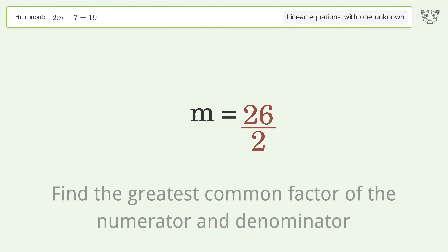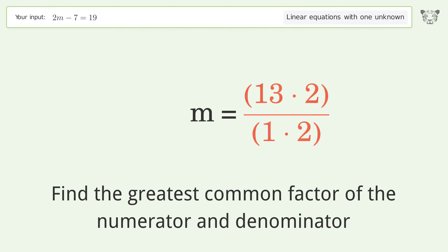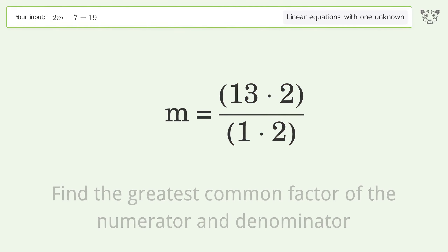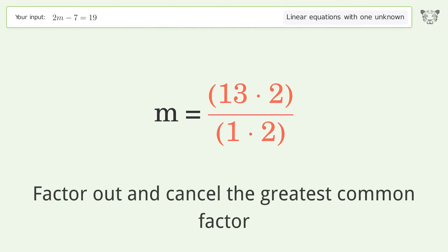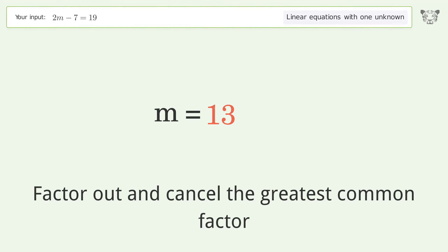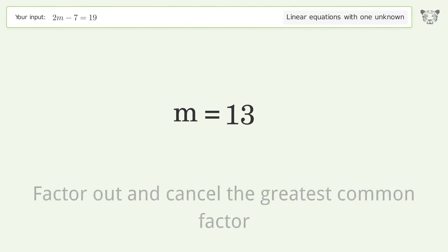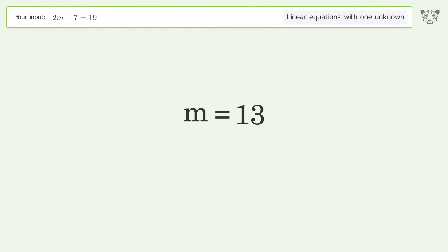Find the greatest common factor of the numerator and denominator. Factor out and cancel the greatest common factor. And so the final result is m equals 13.